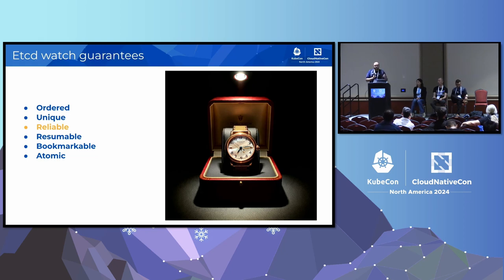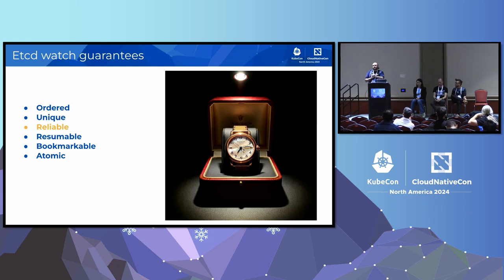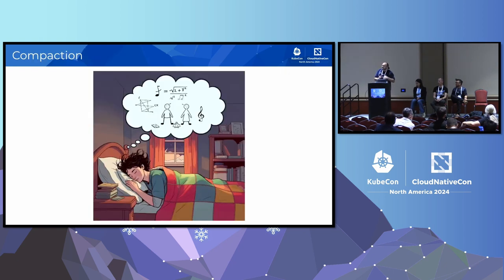In the case described, we broke the reliable guarantee — one or more events we were supposed to see didn't appear. Specifically, there was a delete that was supposed to happen and be visible on watch, but we didn't see it. You can validate this by reading the database file and reading entries from the WAL file, which gives you a history of all writes. You can confirm there was a write that was simply not observed on the watch. To understand what happened, let's talk about compaction.